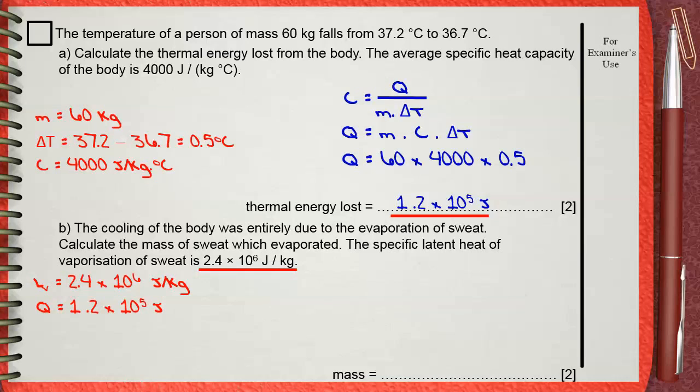And he's asking for the mass. We will use the rule of the specific latent heat of vaporization, Q divided by M. LV equals Q divided by M. So by a small modification, M will equal Q divided by LV. Q, which is from the previous question A, 1.2 times 10 power 5 joules, divided by 2.4 times 10 power 6 joules per kilogram. This shows that the mass of sweat that evaporates to cool the body from 37.2 to 36.7, this equals 0.05 kilograms.